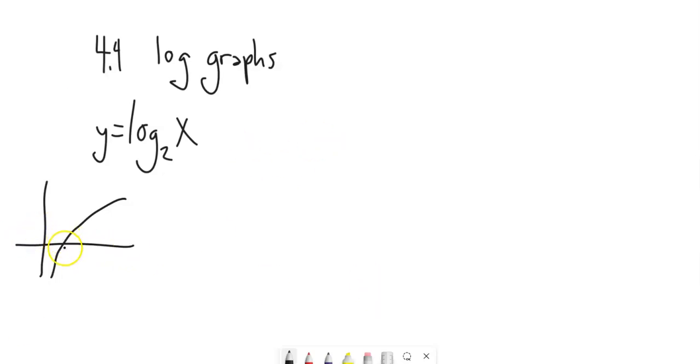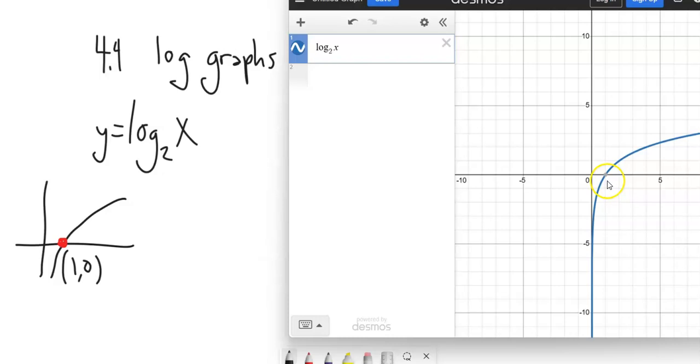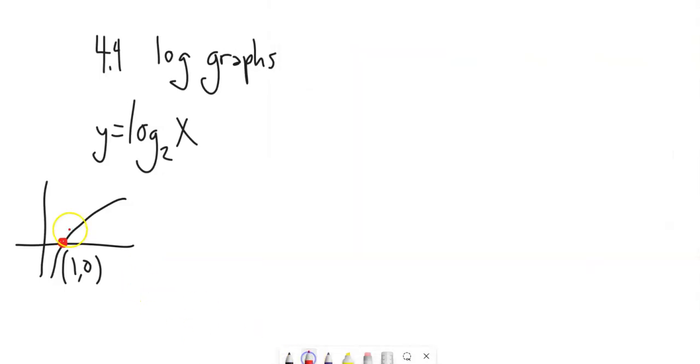A couple things to note on this graph. This point that's right here on this parent graph, this is the point (1,0). And another thing that I notice is this base of 2. There's a point here that's at (2,1).